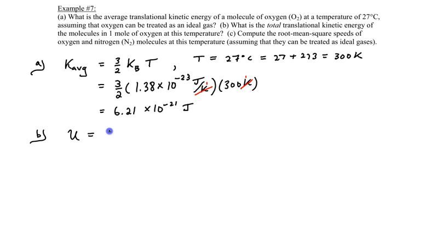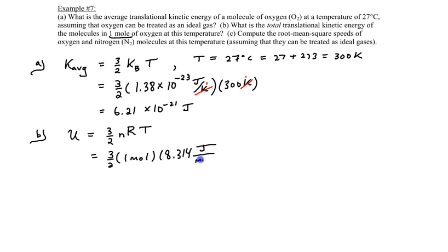So the total translational KE equals (3/2) × n × R × T, where n is the number of moles, R is the gas constant, and T is temperature in Kelvin. Substituting: (3/2) × 1 mol × 8.314 J/(mol·K) × 300 K gives approximately 3,740 joules as the total energy.